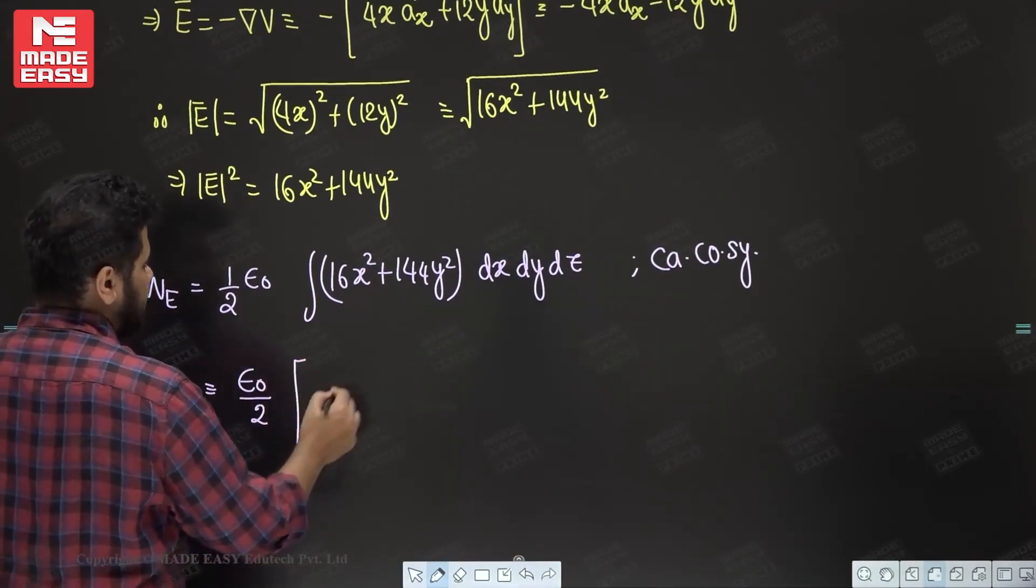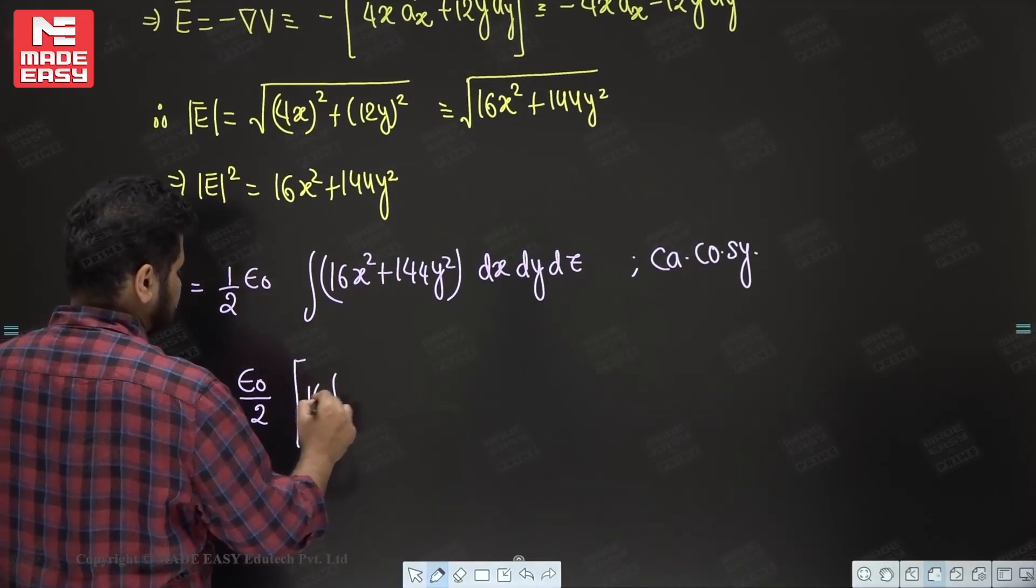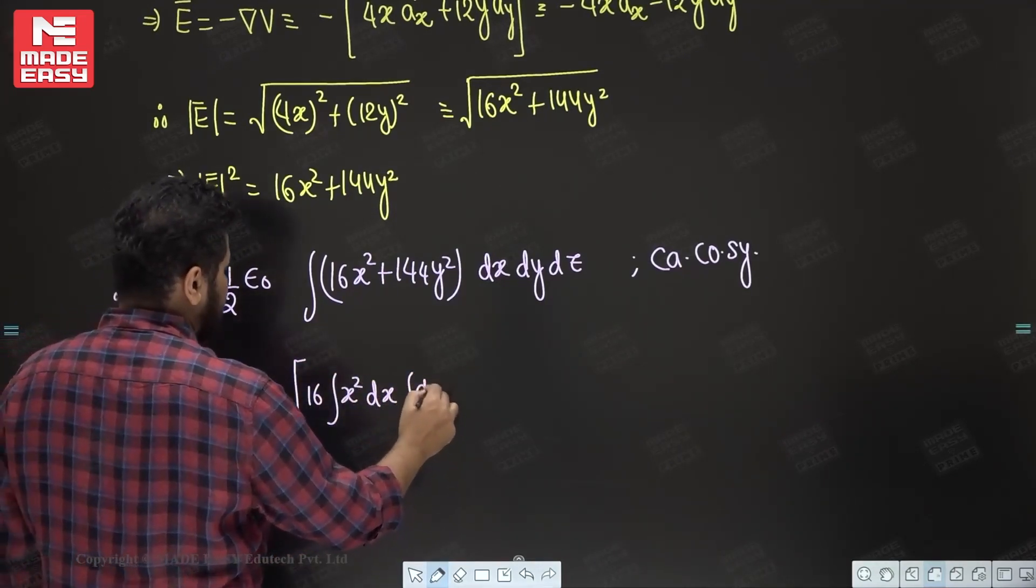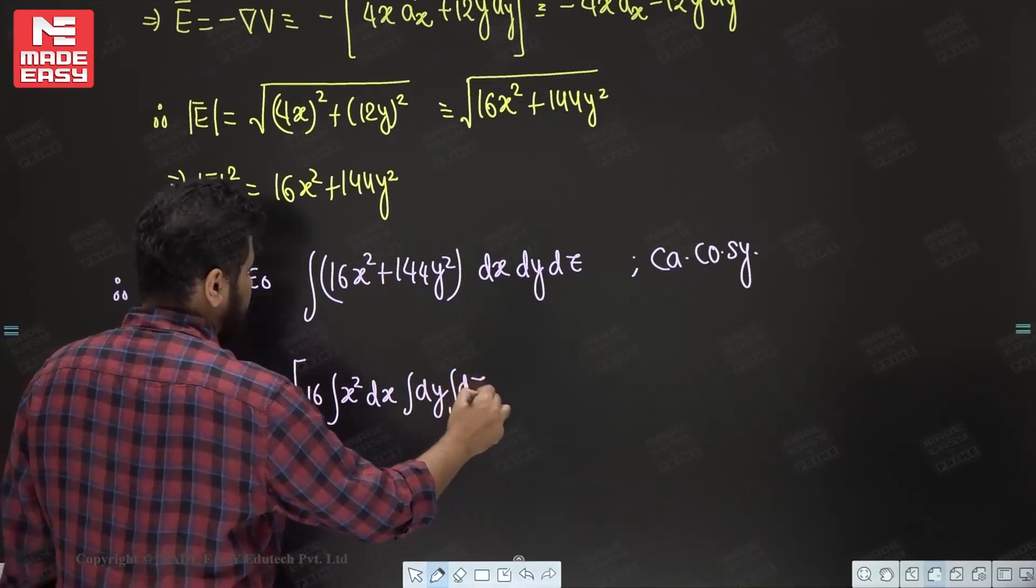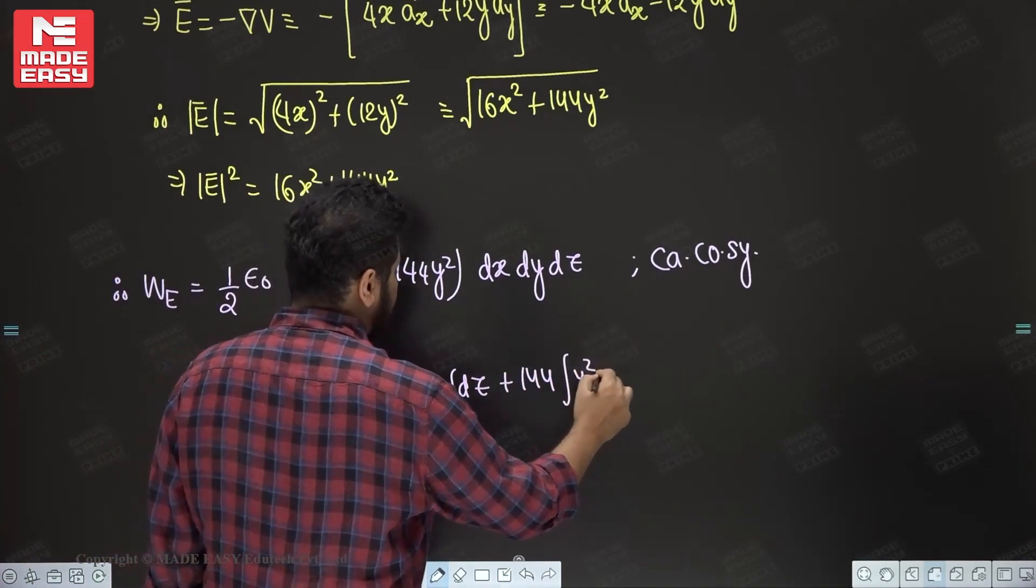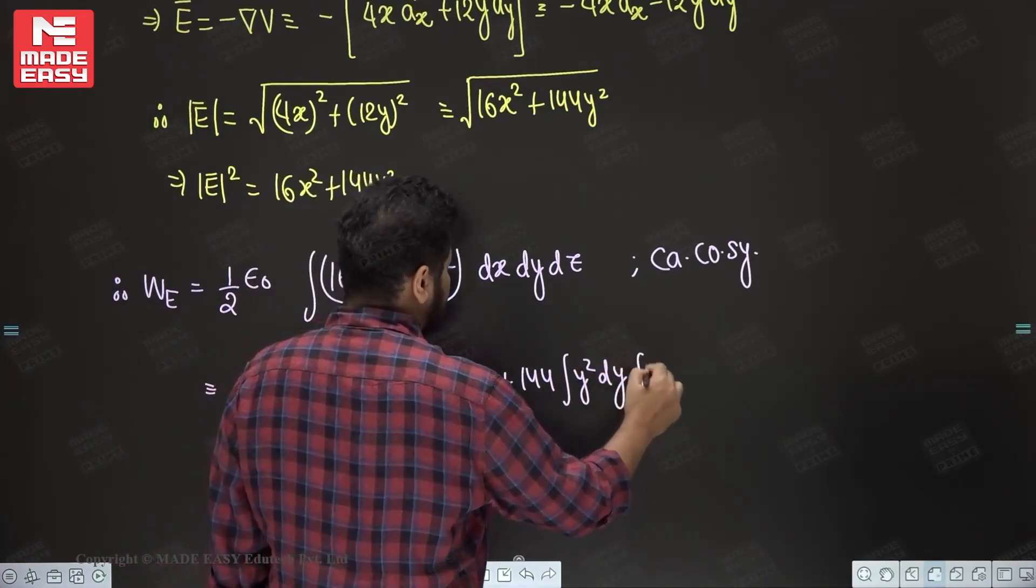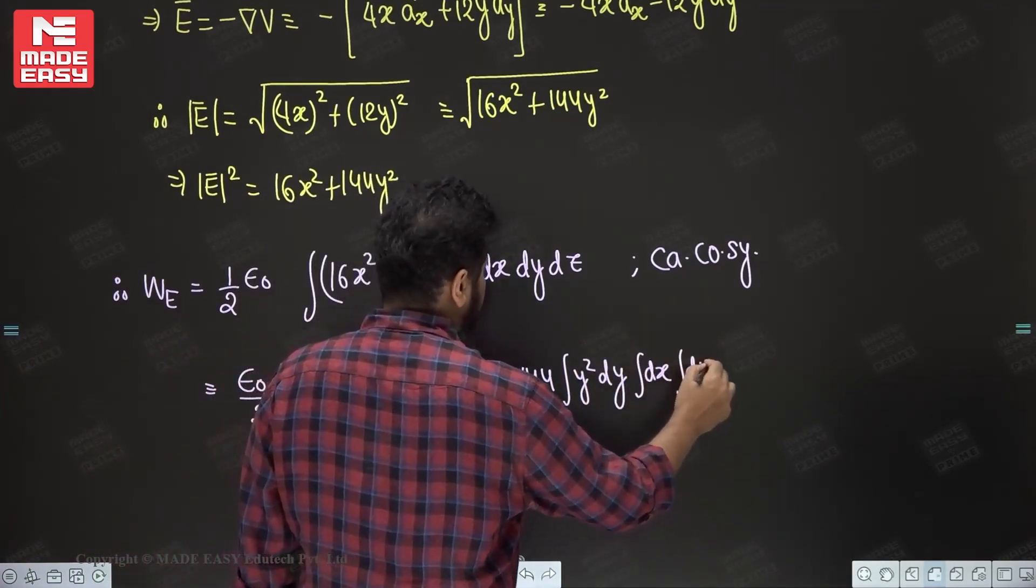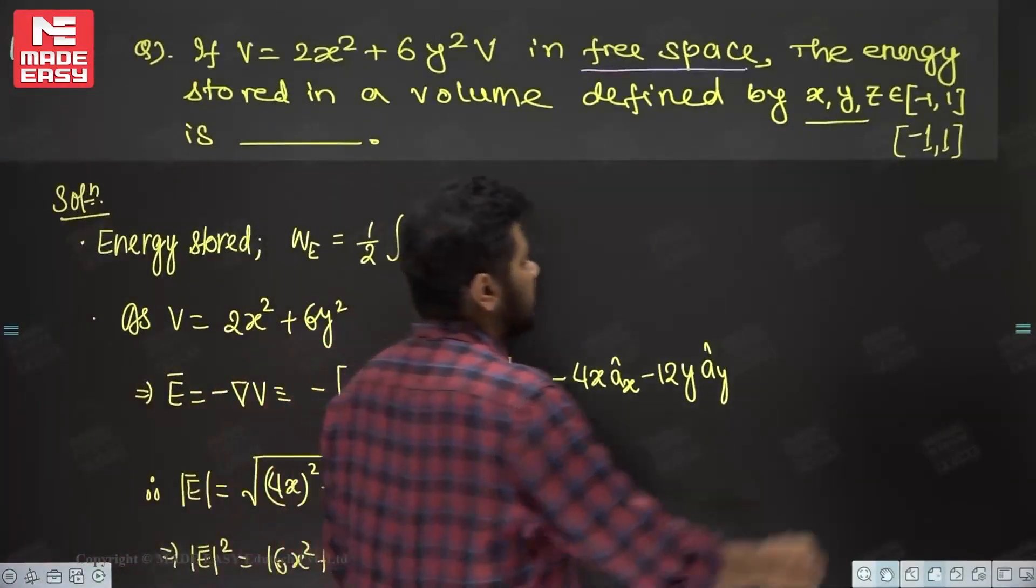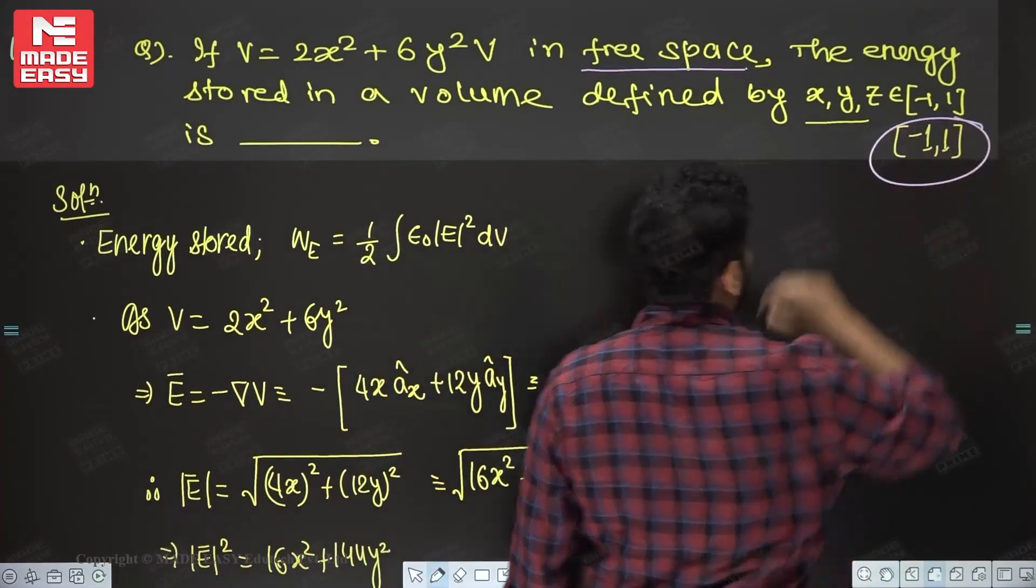Now this is your basically, we can integrate as 16x² dx dy dz plus 144y² dy integration of dx integration of dz. Now if I look at the range of x, y and z.